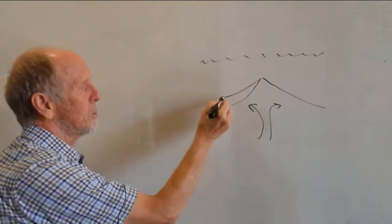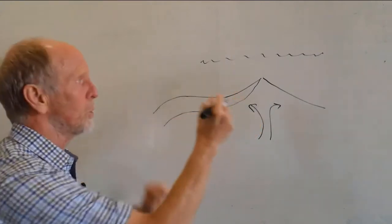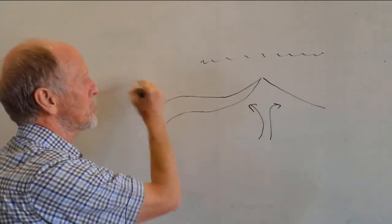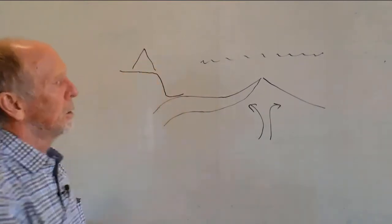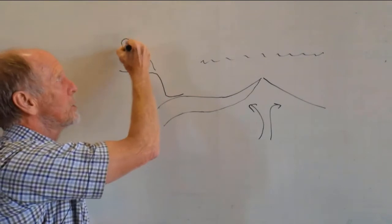That ocean crust can be taken, and I've made a very compressed view of this, to a deep sea trench. And here we have another volcano. So this would be a ring of fire type volcano.